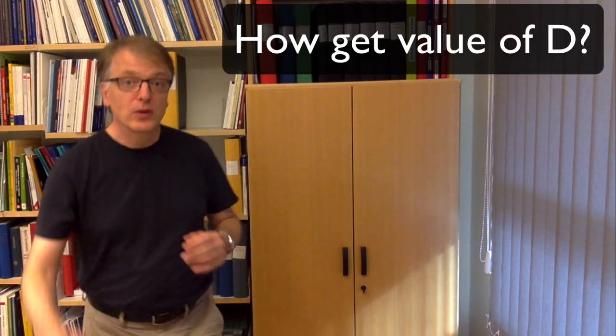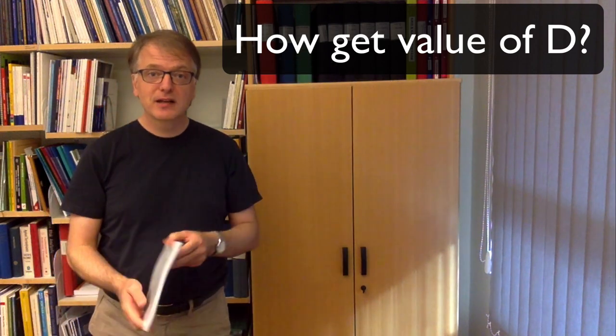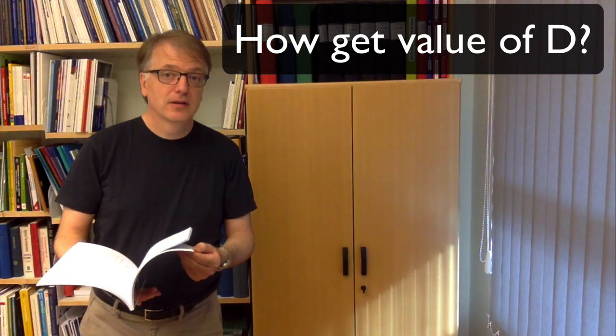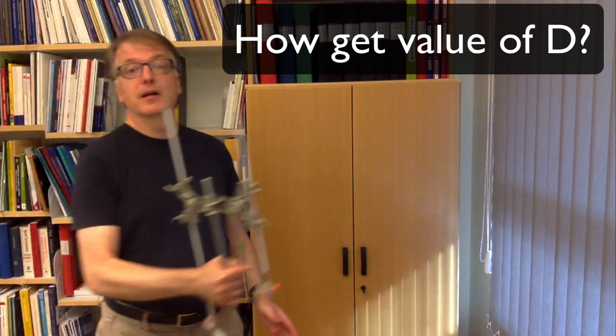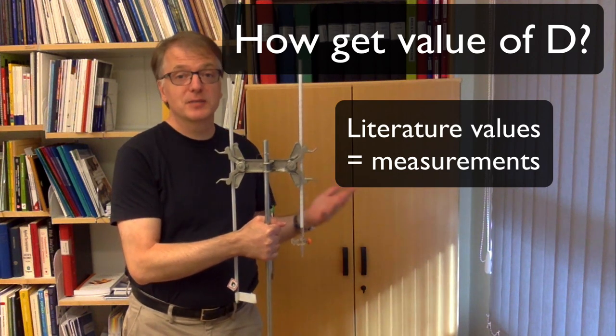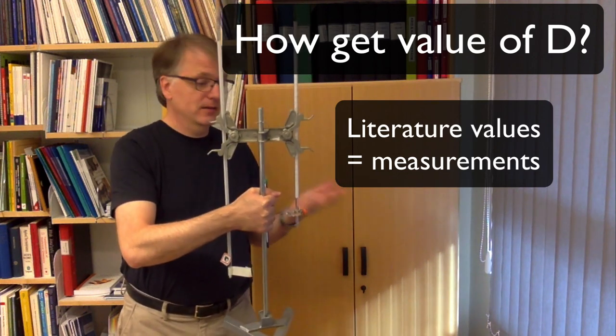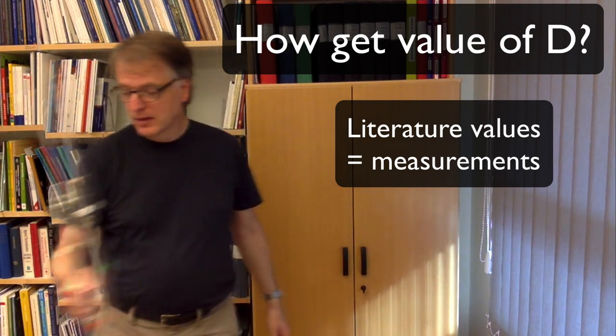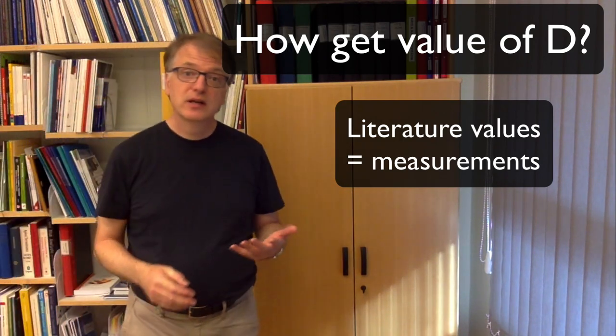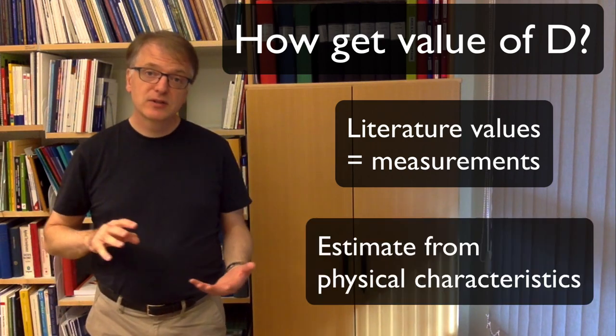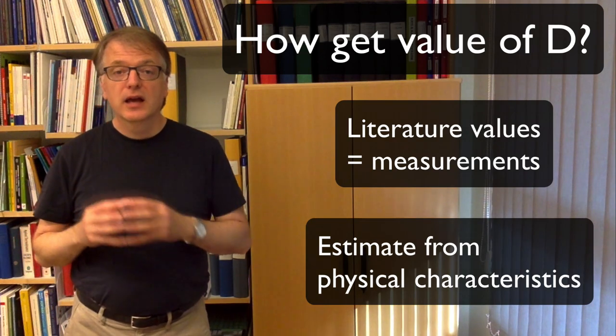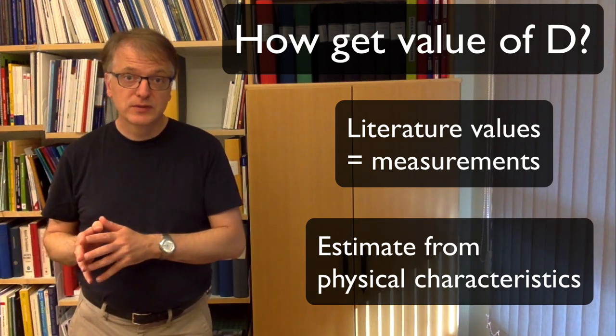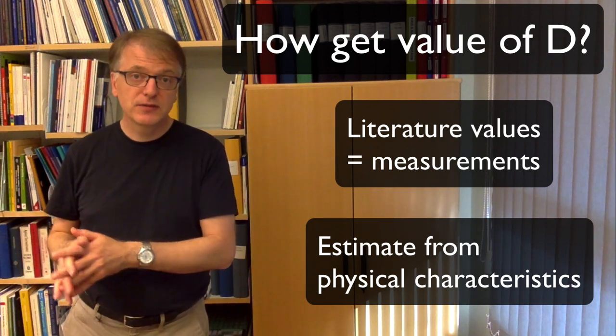Okay, but how do you get a value of diffusivity? Well, you could do it like this: you take a handbook of some kind and then you look it up. But how did they get to that number? Well, they made measurements. So they determined them by experiments with, for example, an equipment like this. But another thing you can do is to estimate the diffusivity based on different physical characteristics. And we will do both in this course. We will do one composite task with determining diffusivity, and we will do a lot of calculations where we estimate the diffusivity from physical characteristics.